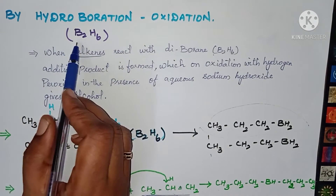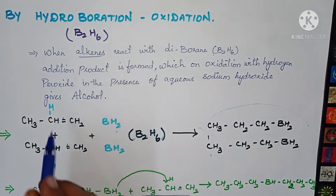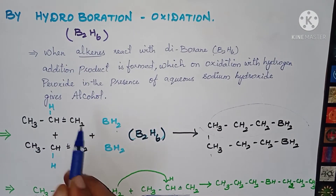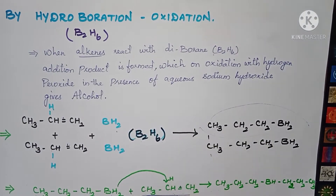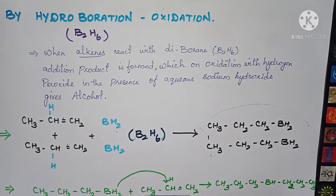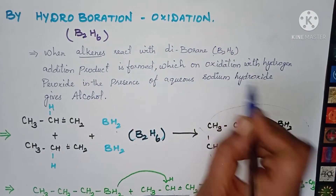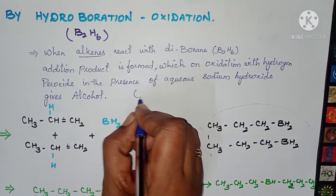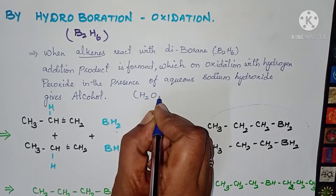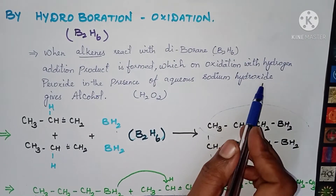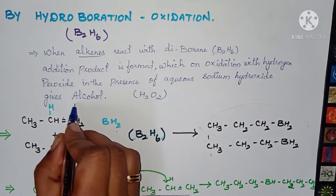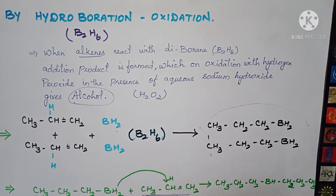In hydroboration, alkene is taken along with the diborane compound B2H6. We get an addition product. After getting the addition product, we use hydrogen peroxide H2O2 in the presence of aqueous sodium hydroxide, and finally we get alcohol.